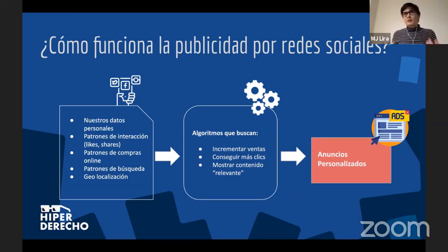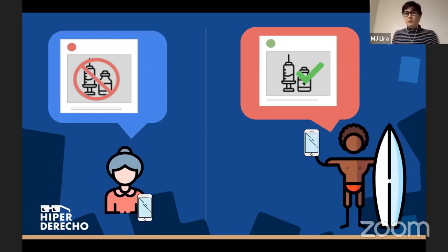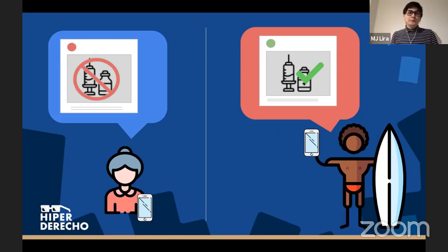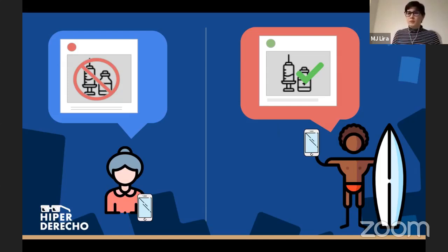Por ejemplo, los temas de las vacunas. Actualmente estamos recibiendo información constantemente sobre si la vacuna es buena o mala, si hay otros métodos alternativos. Y nos damos cuenta que personas de la familia reciben información que nunca nos ha llegado a nosotros, que no tiene nada que ver con lo que nosotros recibimos. Ahí podemos ver que existen unas pequeñas burbujas de información que se forman en base a nuestras huellas digitales.